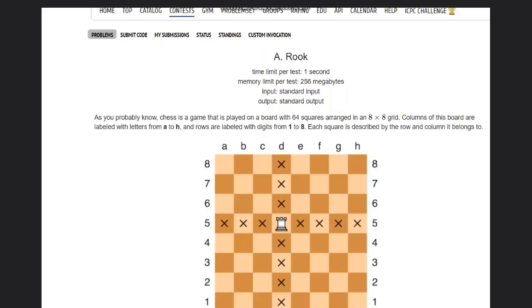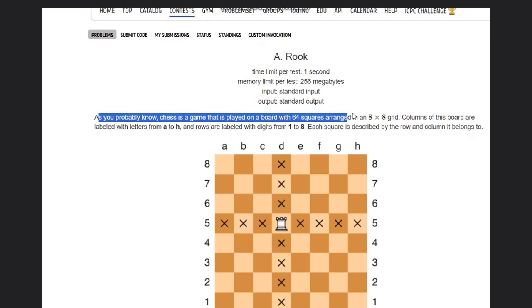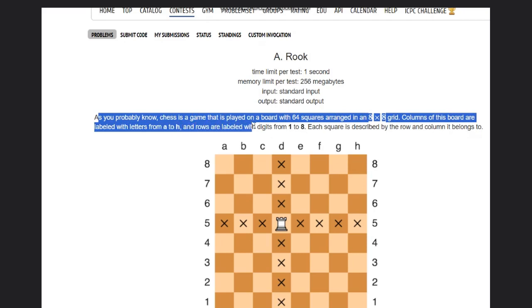Hello everyone, welcome to the channel. Here we are discussing the Rook question on CodeForces. The problem states that chess is a game played on a board with 64 squares arranged in an 8x8 grid. Columns of this board are labeled from letters a to h and rows are labeled with digits 1 to 8.